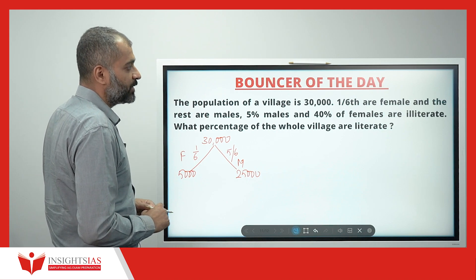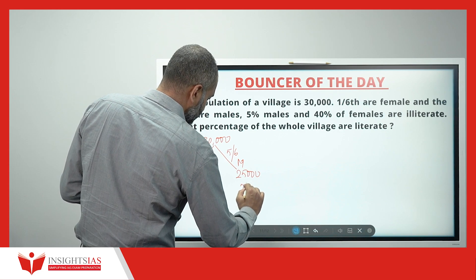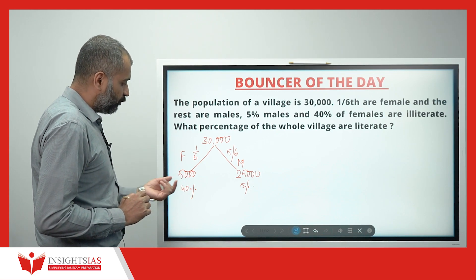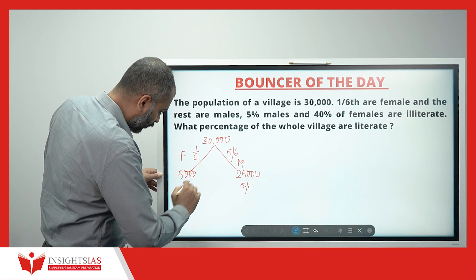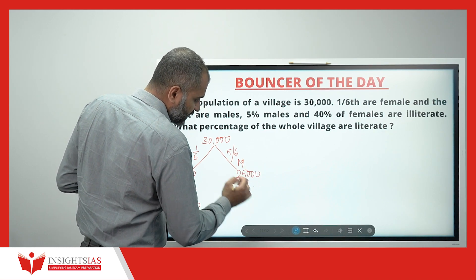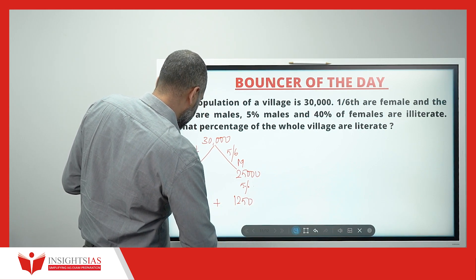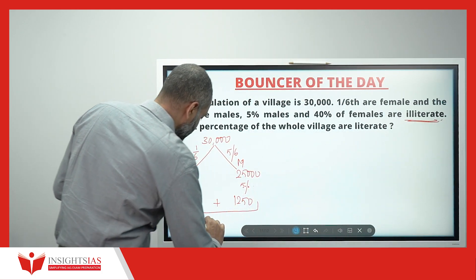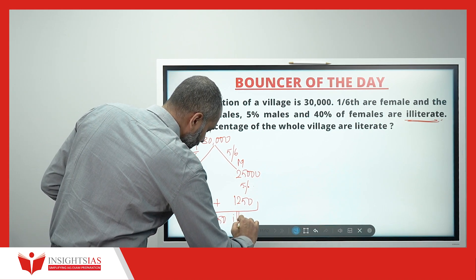5% of males and 40% of females are illiterate. 40% of 5,000: 10% of 5,000 is 500, so 40% is 2,000. Similarly, 5% of males (25,000): 1% is 250, so 5% is 1,250. Total illiterates: 3,250.